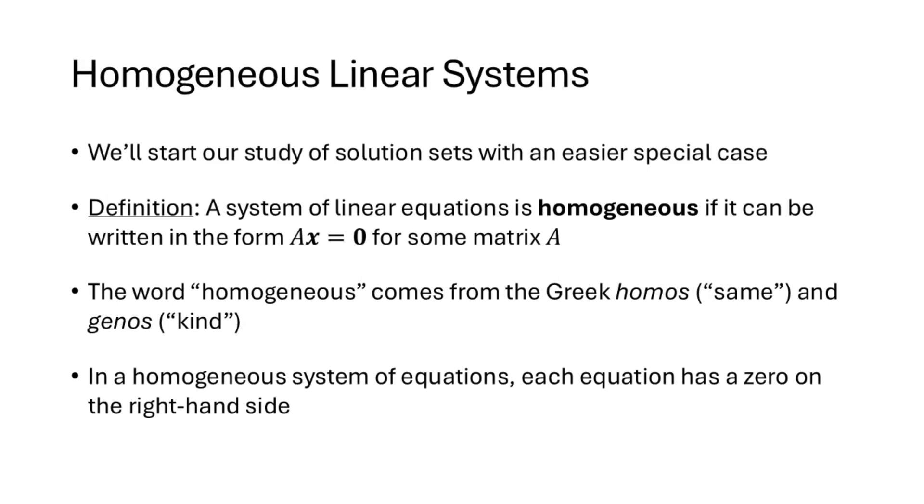Now we're going to start our study of solution sets with an easier special case. A system of linear equations is homogeneous if it can be written in the form Ax equals 0 for some matrix A. In a homogeneous system of equations, each equation has a 0 on the right-hand side.